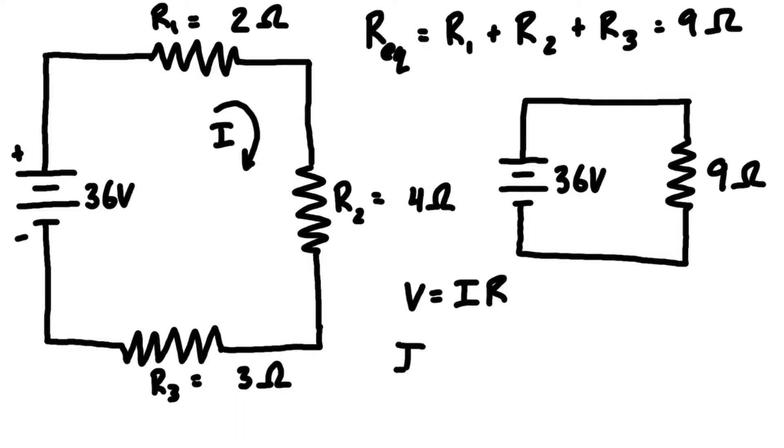We can rearrange for I and we get voltage over resistance. We have our total voltage which is 36 volts divided by our equivalent resistance which is 9 ohms, and 36 divided by 9 means that our current is 4 amps.